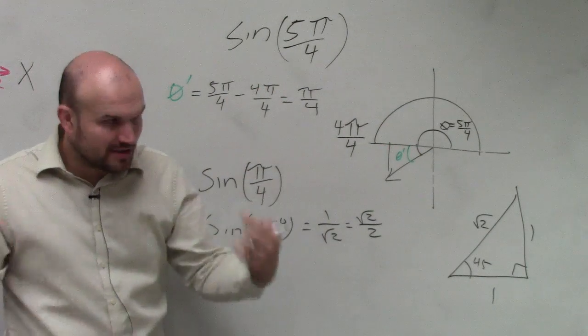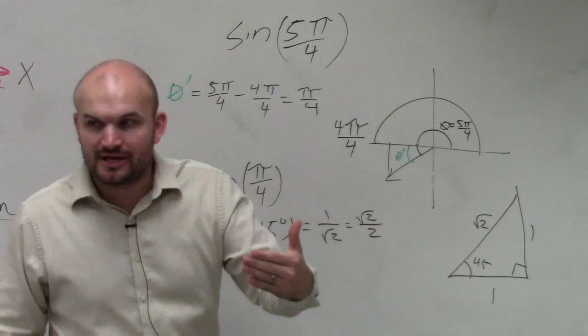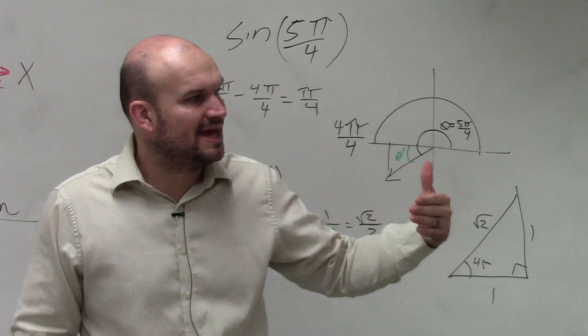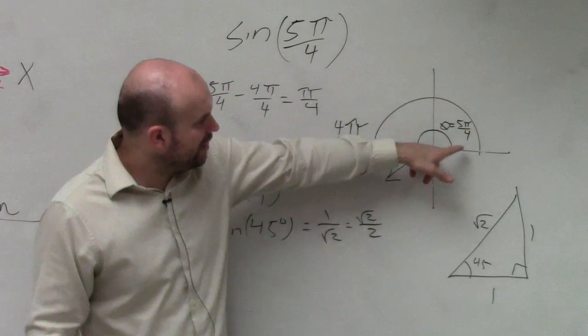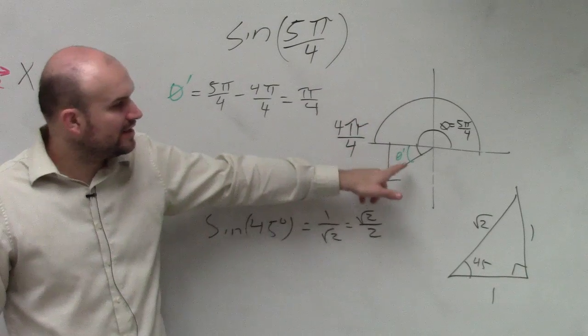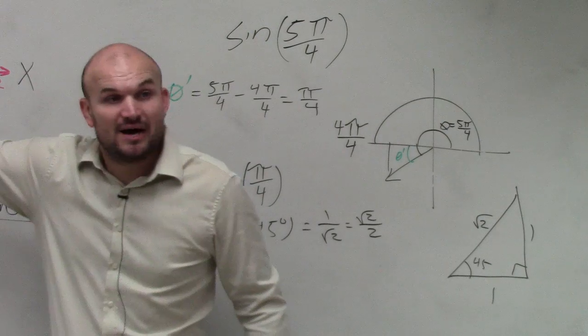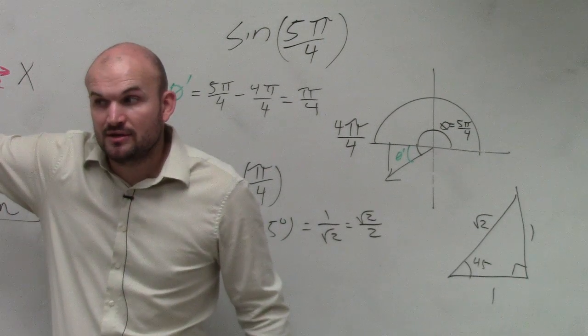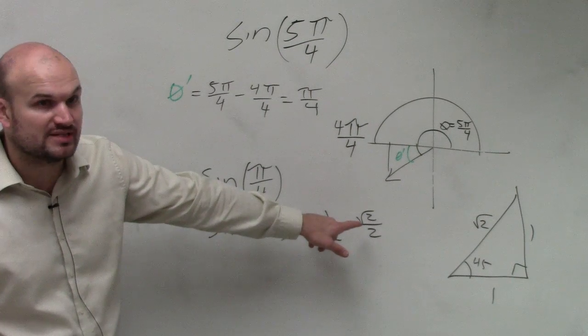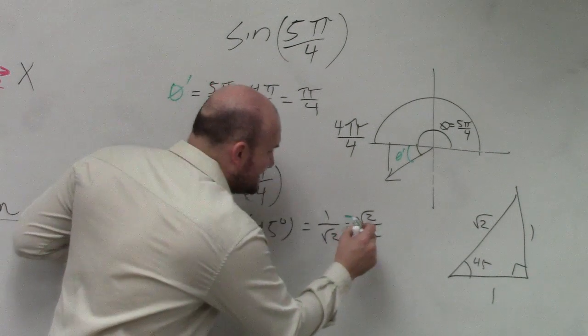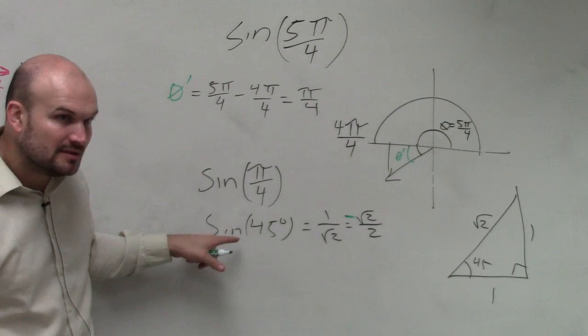However, there's one little caveat that people are going to get this wrong. If you're using the reference angle, you have to understand what quadrant the terminal side lies on. So of this angle, what quadrant does my terminal side lie? Third quadrant. Is sine positive or negative in the third quadrant? Negative. So guess what? Square root of 2 over 2 is incorrect. It's negative square root of 2 over 2, because it's the sine. Right?